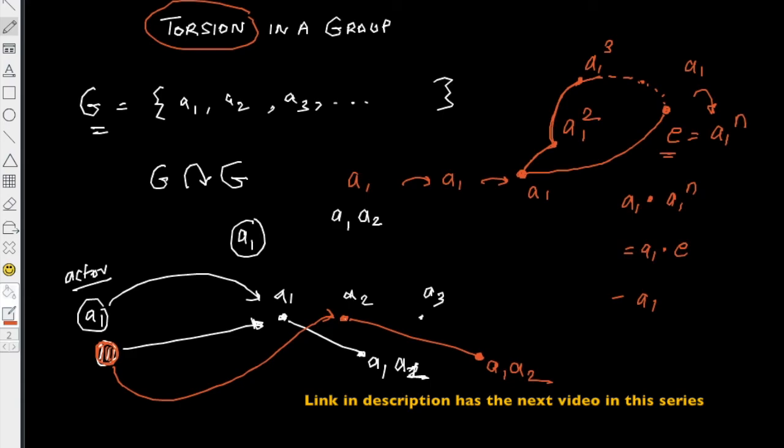In our bouncing around analogy, in that geometric intuition, a group has torsion if an element, when repeatedly acted upon by itself, bounces through some path and comes back to the same point. Only then it's a torsion element.